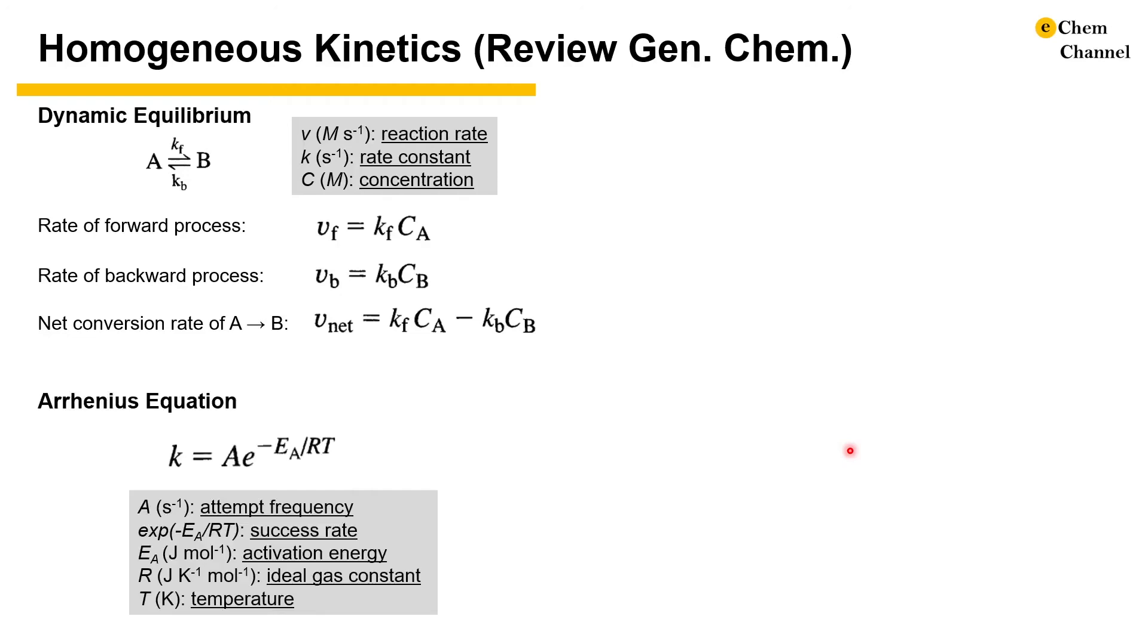The rate constant follows the Arrhenius relationship, where the A term represents the attempt frequency, the exponential term is the success rate, which is the probability of using thermal energy RT to overcome an activation energy barrier EA.